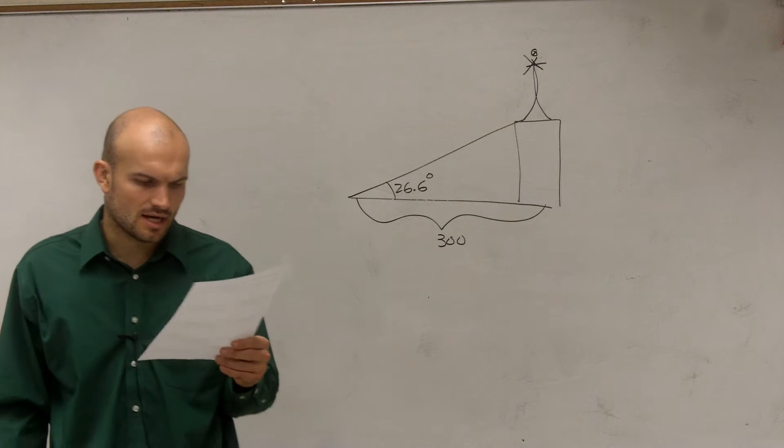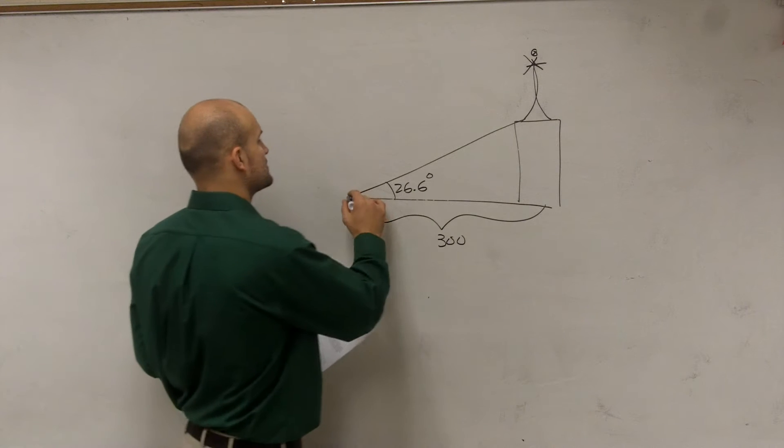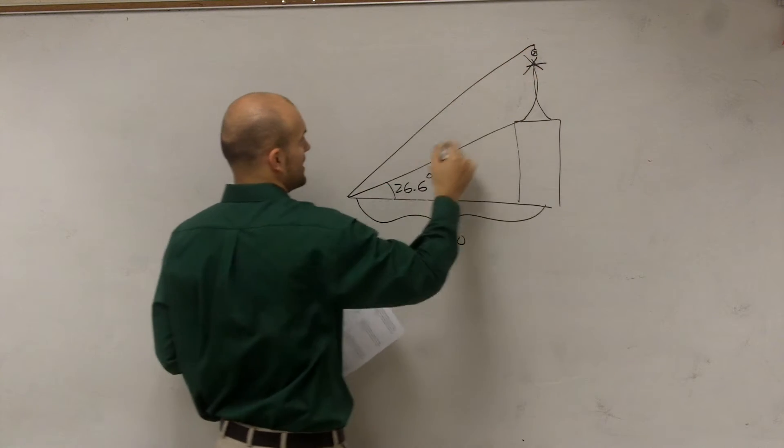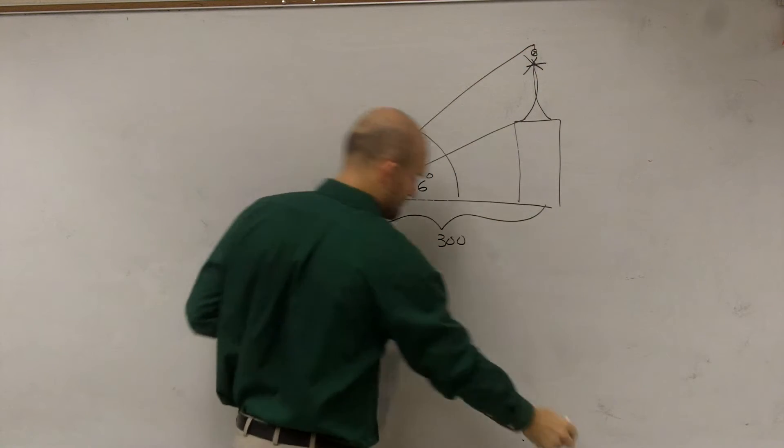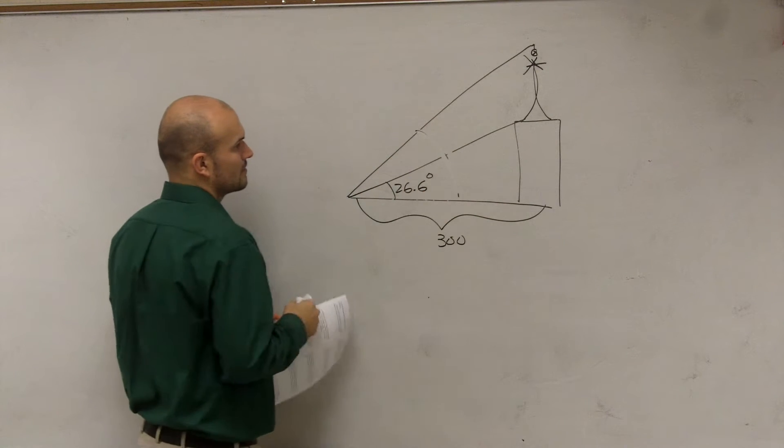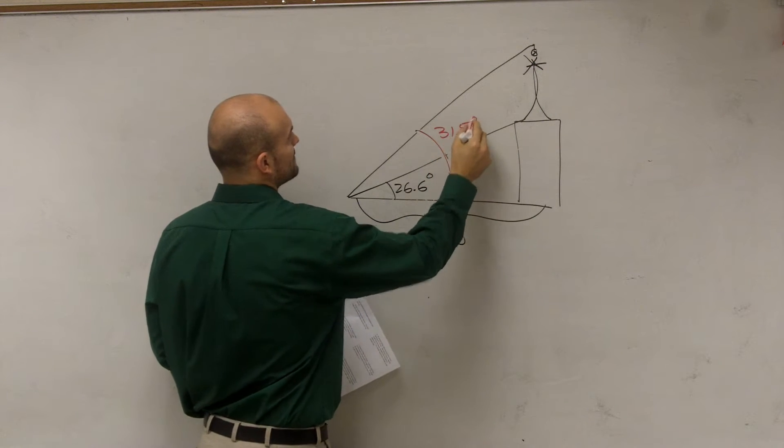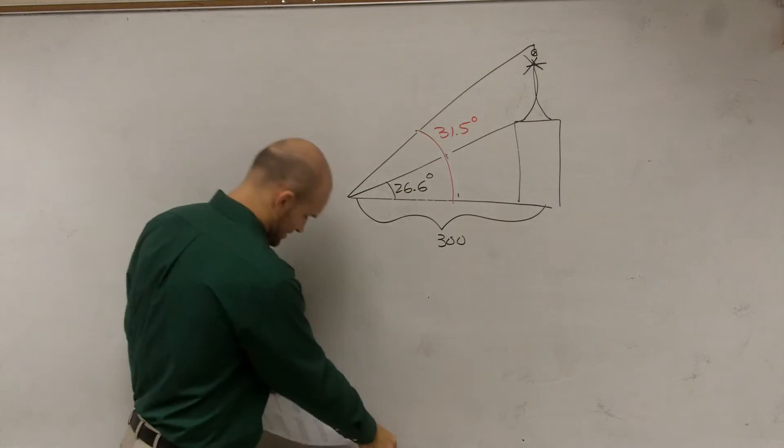Then it says the angle of elevation to the top of the antenna is 31.5 degrees. So the top of the antenna is about a color coordinate again. This angle is 31.5 degrees.